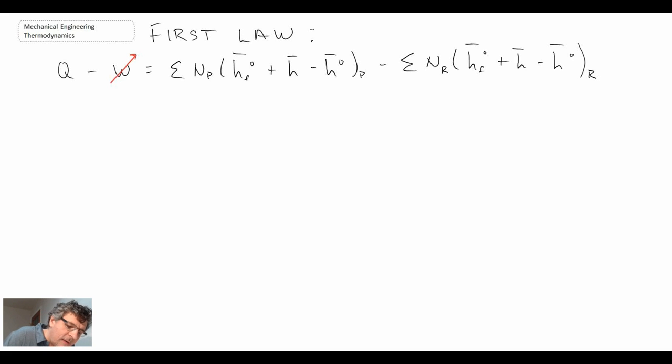What we're going to do is look up the enthalpies from tables in the back of your book. In doing this, we need to look up the values for the different temperatures we have within our system. We were told that things come in at 25 degrees C and leave at 600 Kelvin. So to begin with in this table, I'm going to write out the substance we're dealing with.